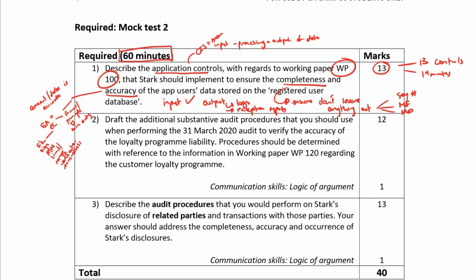Question 2: draft the additional substantive audit procedures. So additional—I mustn't discuss anything that is in the information. Substantive means general procedures, analytical, and my test of detail that you should use when performing the 31 March 2020 audit to verify the accuracy of the loyalty program liability. So again, one assertion: accuracy. And the loyalty program liability is what we're looking at. Procedures should be determined with reference to the information working paper 120. So I'm only looking there regarding the customer loyalty program. Okay, so a little bit of panic, I imagine. I imagine you've got IFRS 15 open, or you are panicking to get it open, because you now know you've got to look at this customer loyalty program and its accuracy. So in terms of accuracy, what we're really looking at is the calculation for this liability.